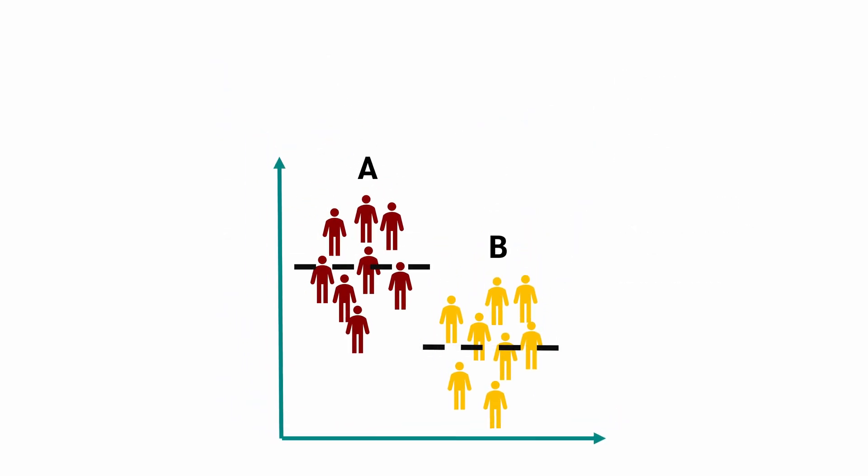Therefore, in an independent samples t-test, the degrees of freedom are n1 plus n2 minus 2, where n1 and n2 are the sample sizes of the two groups and the two results because of the two means.